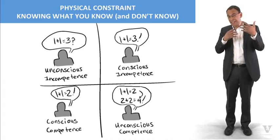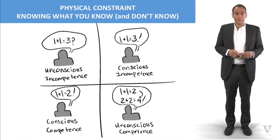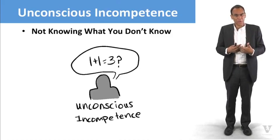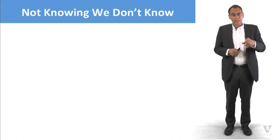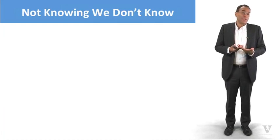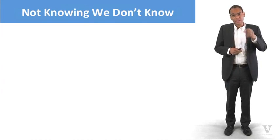So each one of these represents a constraint of sorts, and we want to look at these in detail individually. So let me start with unconscious incompetence. Unconscious incompetence is when you don't know what you don't know. Why is that a problem? Well, sometimes not knowing what you don't know can lead to adverse outcomes.